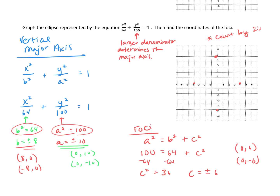Counting by 2's, we go up 2, 4, 6 — I'll put an 'f' to note that is a focus — and go down 6. Now we can draw in our ellipse: it goes through the vertex, through the co-vertex, through the vertex, through the co-vertex, and back. This is our major axis that has the foci on it; this is our minor axis. The major axis will always be the longer axis.